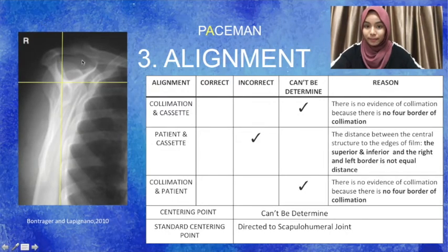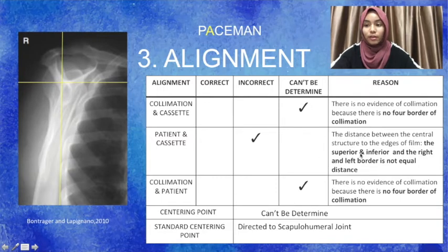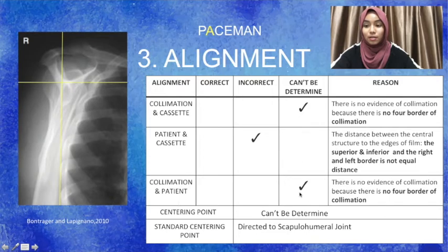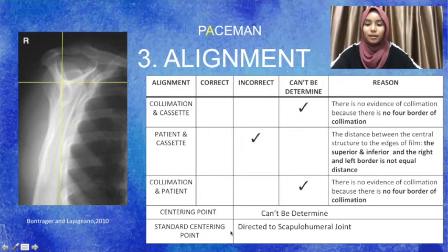For alignment, the alignment between collimation and cassette cannot be determined because there is no evidence of collimation borders visible. The alignment of patient and cassette is incorrect because the distance between the central structure and the edges of the film on the superior, inferior, right, and left borders is not equal. The standard centering point should be at the scapulohumeral joint.